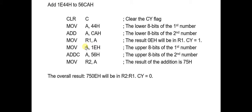In the next step, we move 1Eh to the accumulator and use ADDC with 56h, because we have one carry from the previous step. So the addition plus one gives a result of 75h. We then move this result to the R2 register. The overall result is 750h stored across R1 and R2, since we have 8-bit registers. This is a simple example of 16-bit addition.